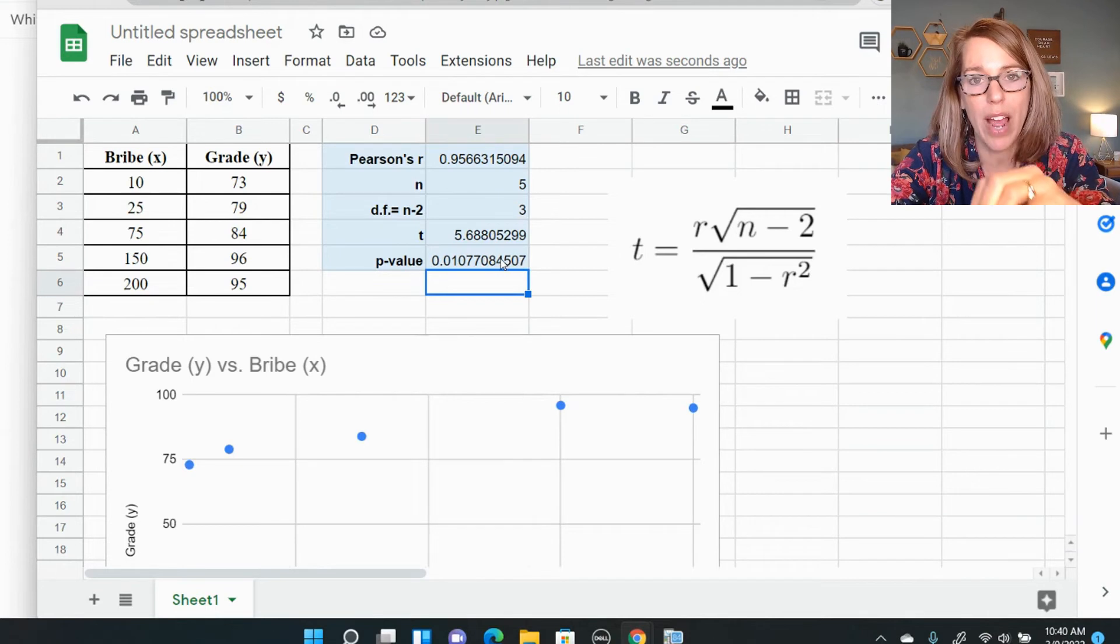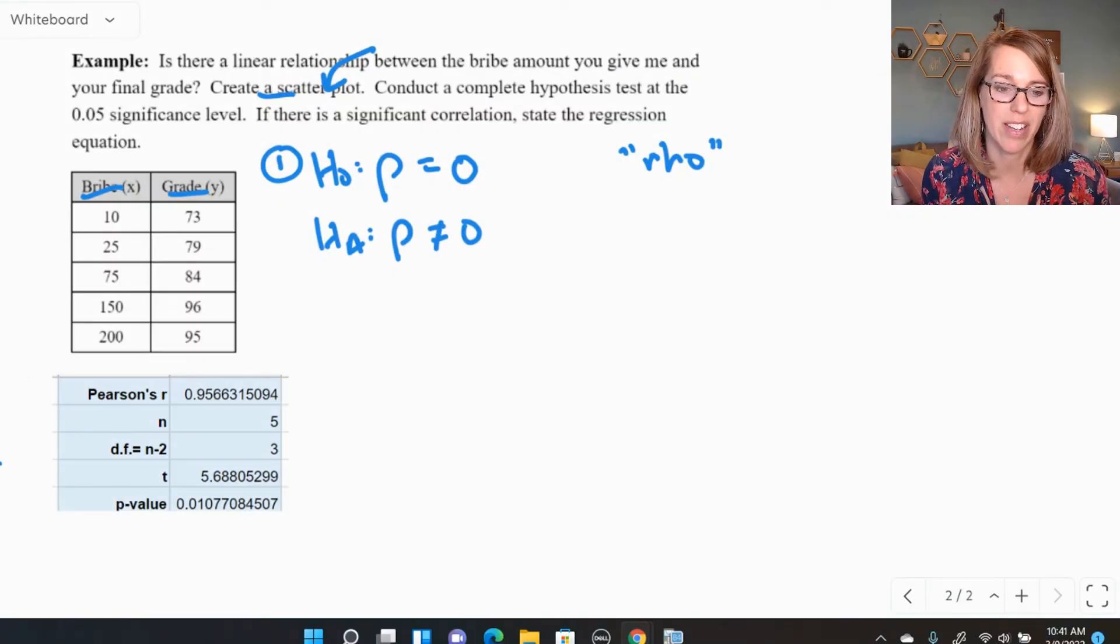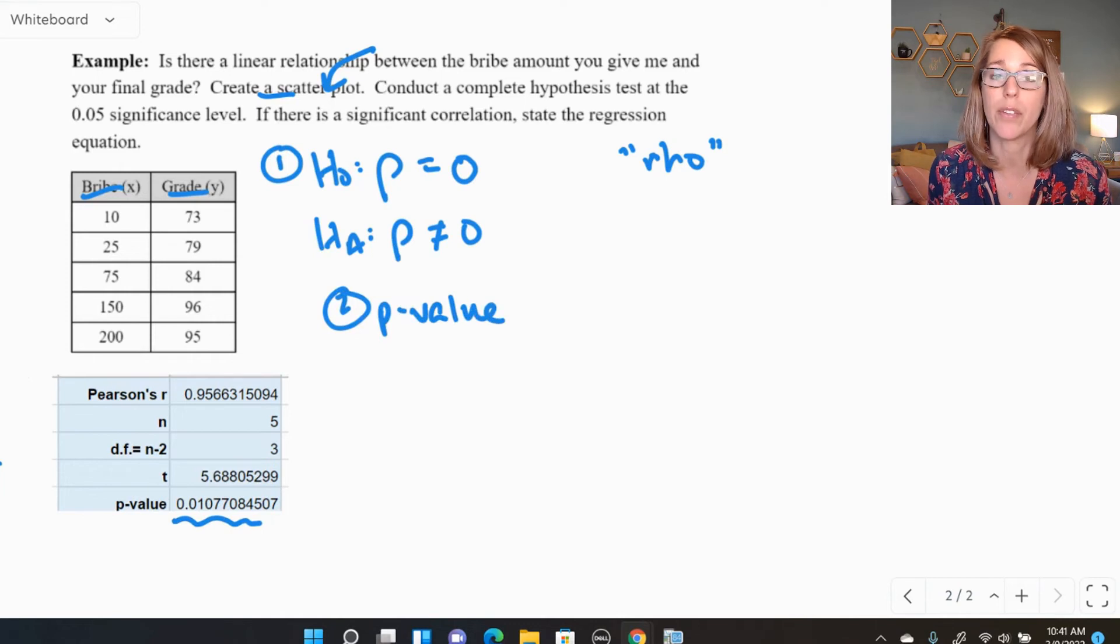I'm going to go ahead and grab this information and let's go ahead and put it onto our hypothesis test. I've got the information that I calculated in Google sheets here. I'm going to go ahead and use my P value. So my P value, so I'm going to call that step number two, my P value is actually pretty darn small. It's a P value. It's an area of the tail and it's about 0.010 if we round that to 0.8.